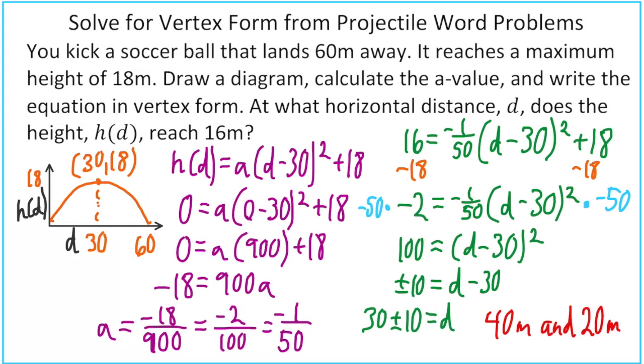So that'll do it. That is how we can solve for vertex form from projectile word problems by calculating our a value. The key is substituting in a reference point, and 0, 0, if it's part of your graph, is usually the easiest one. Thank you.